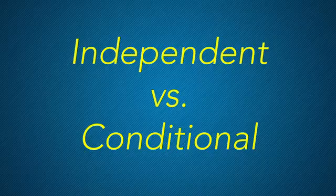Suppose you pull out the queen of hearts, so you decide to try again, but you do not put the queen of hearts back into the deck. Now the probability of pulling out the ace of spades is one in 51. This is conditional probability.